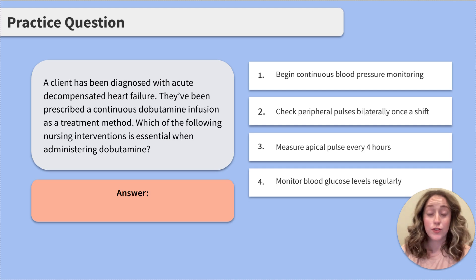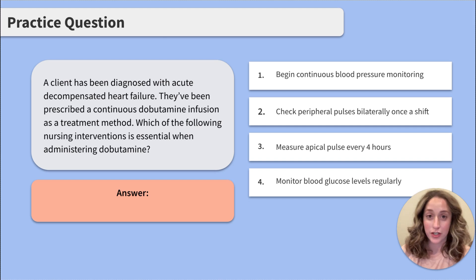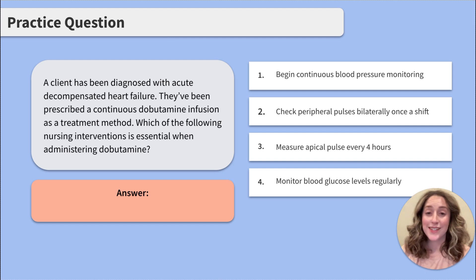Two: check peripheral pulses bilaterally once a shift. While this is an important part of nursing assessment and should be assessed every shift to monitor peripheral perfusion, it is not the most essential intervention at this time, and it is not the most effective way to assess systemic blood flow.